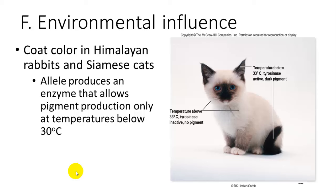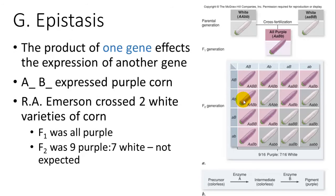Environmental influences also play a role — for example, coat color in Himalayan rabbits and Siamese cats. The allele produces an enzyme that allows pigment production only at temperatures below 30 degrees, so the ears, tail, feet, and nose, which are exposed to cooler temperatures, produce black pigment, while everything else is white. Epistasis is where one gene affects the expression of another. For example, to get purple corn you need both big A and big B. When Emerson crossed two white varieties, F1 was all purple, but the F2 showed a nine to seven ratio instead of the expected three to one.